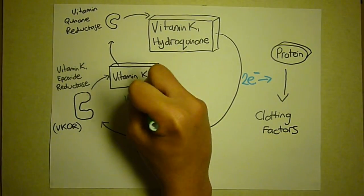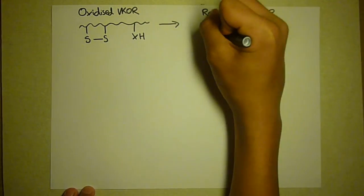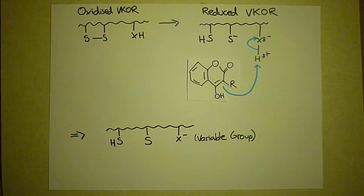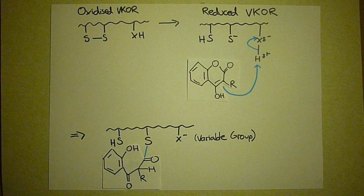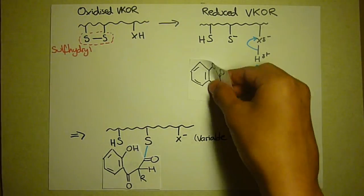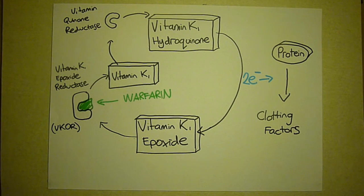Warfarin inhibits this enzyme, preventing the reduction of vitamin K epoxide. A scientist named Silverman proposed that the warfarin molecule was susceptible to electrophilic addition by the enzyme, which meant sulfur groups or other variable groups necessary to the active site were covalently bonded to the warfarin. Recent experimental data has instead suggested that warfarin binds to the sulfhydryl functional group. Regardless, the vitamin K cycle cannot proceed, meaning that the clotting factors cannot be synthesized.